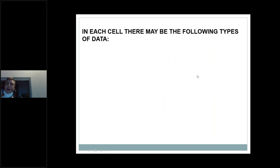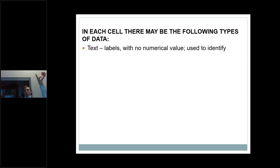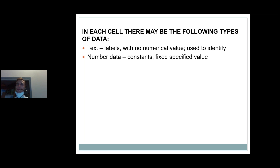We can put different types of data into a cell. Text data often acts as labels — for example, a column of employee ID numbers makes more sense when the top row has a text label saying 'Employee ID Number.' Numerical data consists of specified values we enter ourselves, like keeping track of sales: I sold 15 of this, 25 of that, 30 of another. These are just data values we type in ourselves.